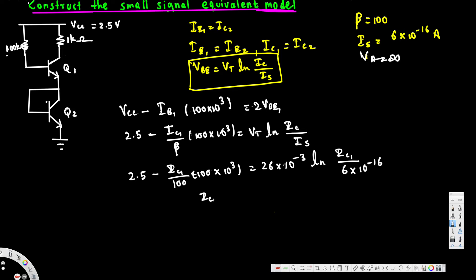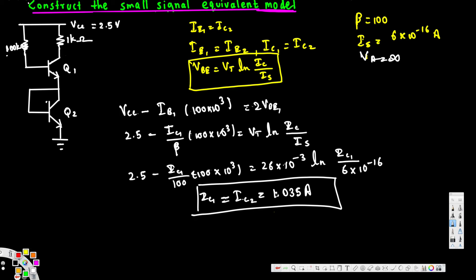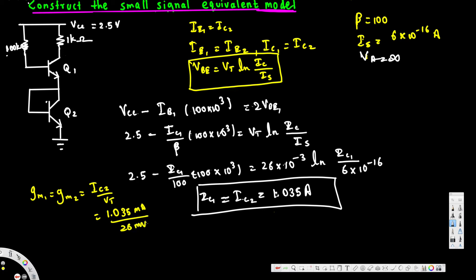Solving for ic1, which also equals ic2, gives 1.035 milliamperes. Next, we find the transconductance: gm1 equals gm2, which equals ic2 divided by vt.